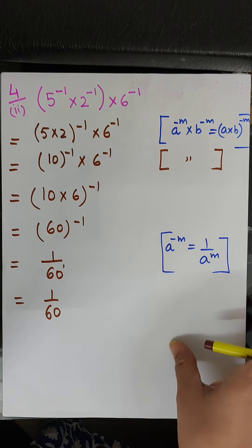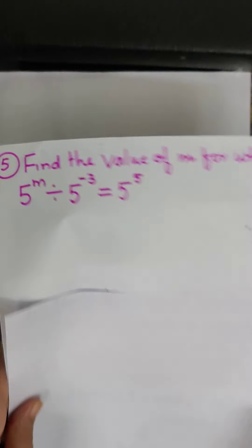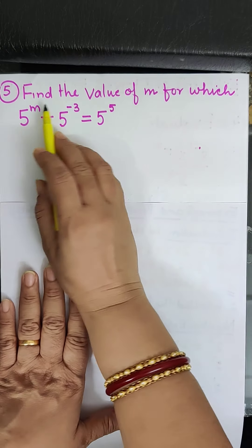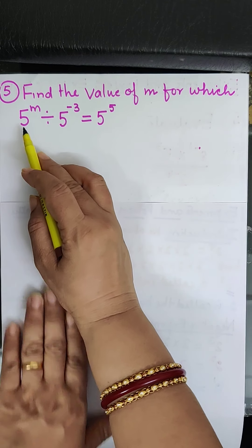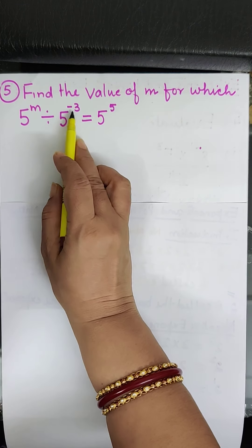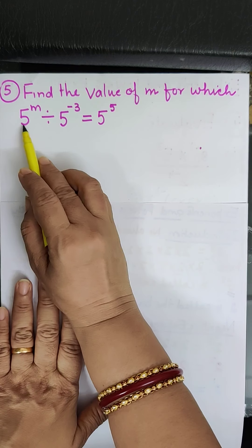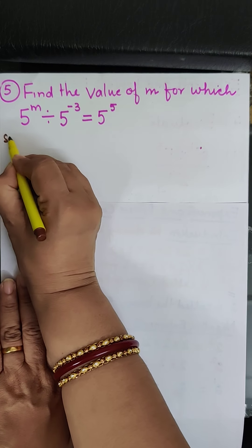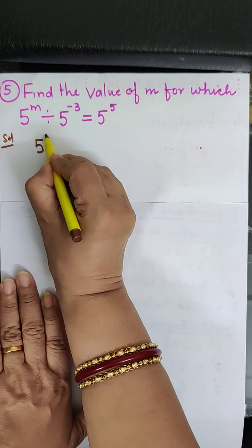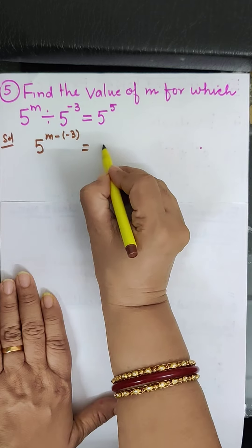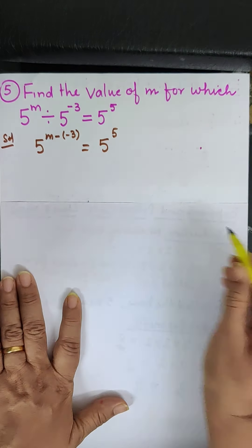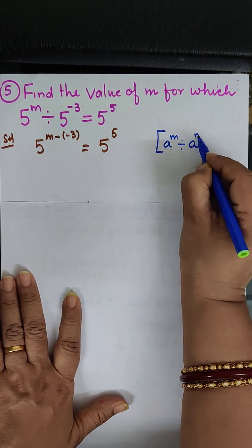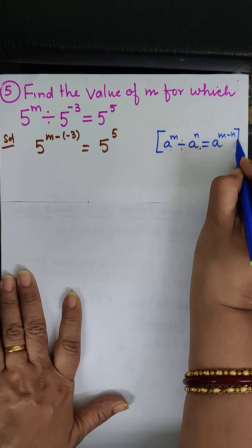Now let us take the 5th question. Find the value of m for which 5 to the power m divided by 5 to the power minus 3 is equal to 5 to the power 5. The bases are the same with a division sign in between, so we subtract the powers. Using the law a to the power m divided by a to the power n equals a to the power m minus n, we get 5 to the power m minus minus 3, equal to 5 to the power 5.